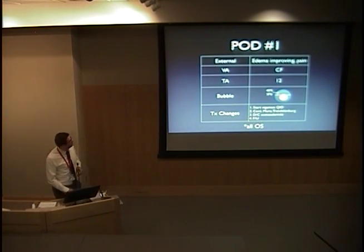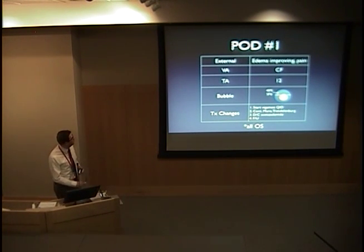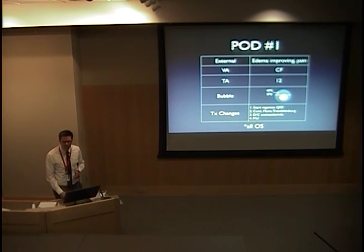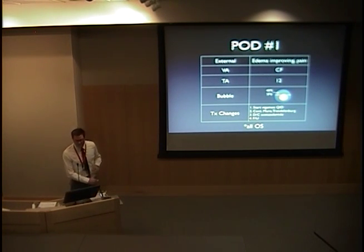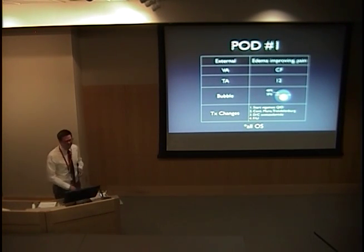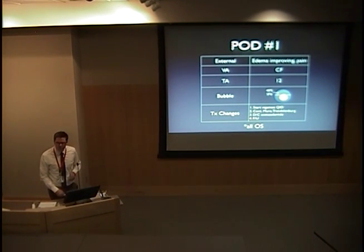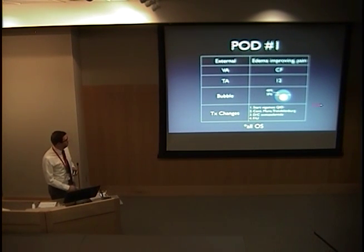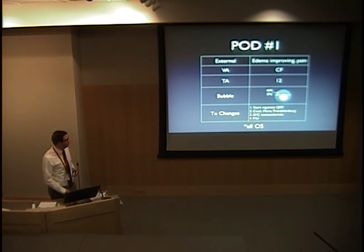We instructed the patient to lie in one-degree reverse Trendelenburg after the operation so that the gas is nicely maintained on top of the inferior portions of the cornea. On post-op day one, we saw this patient and the edema was improving. He still had some pain. His visual acuity was actually worse — he had count fingers, compared to 20/300 on his initial visit. Hydrops was still present, with 40% SF6 in his anterior chamber. We decided to start Vigamox, discontinue ocular hypotensives, and continue Muro and Trendelenburg, then follow up in nine days.